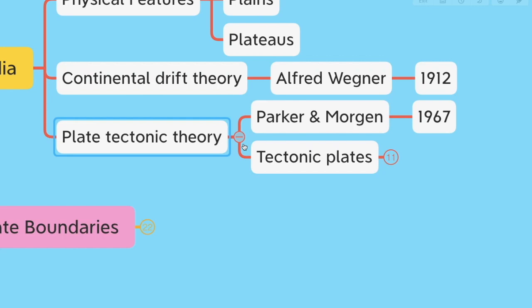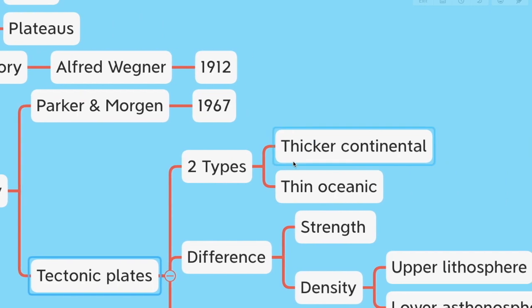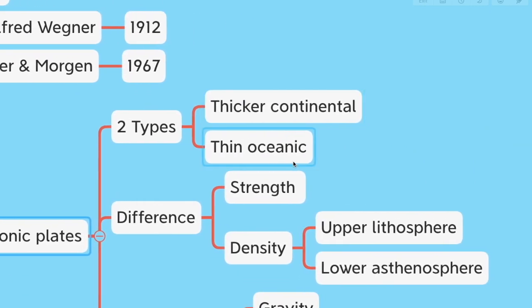The second theory is plate tectonic theory, proposed by Parker and Morgan in 1967. According to them, a tectonic plate is a solid massive rock consisting of both lithospheric and oceanic crust. They believed there were seven major and seven minor plates. The seven major ones are the African, North American, South American, Eurasian, Australian, Antarctic, and Pacific plates.